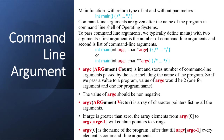argv is where the actual argument values are stored — it is the memory location or array where the arguments will be saved. So argc is the number of arguments and argv is the location where the arguments will be saved. argv can be expanded as argument values, though the proper name is argument vectors. Although the declaration of argv looks intimidating, argv is really just an array of C-style strings, and the length of this array is argc.